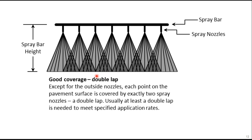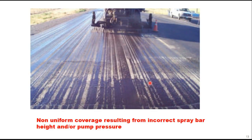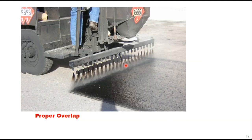Coverage depends on the type of equipment, size of nozzles, pressure at the spray bar, height of the spray bar, and speed of forward movement. A trial should be made to ensure that the equipment is capable of producing a uniform spray. Non-uniform coverage is not desirable and is mainly caused by incorrect spray bar height or low pump pressure. Proper overlap gives a uniform spray on the surface.